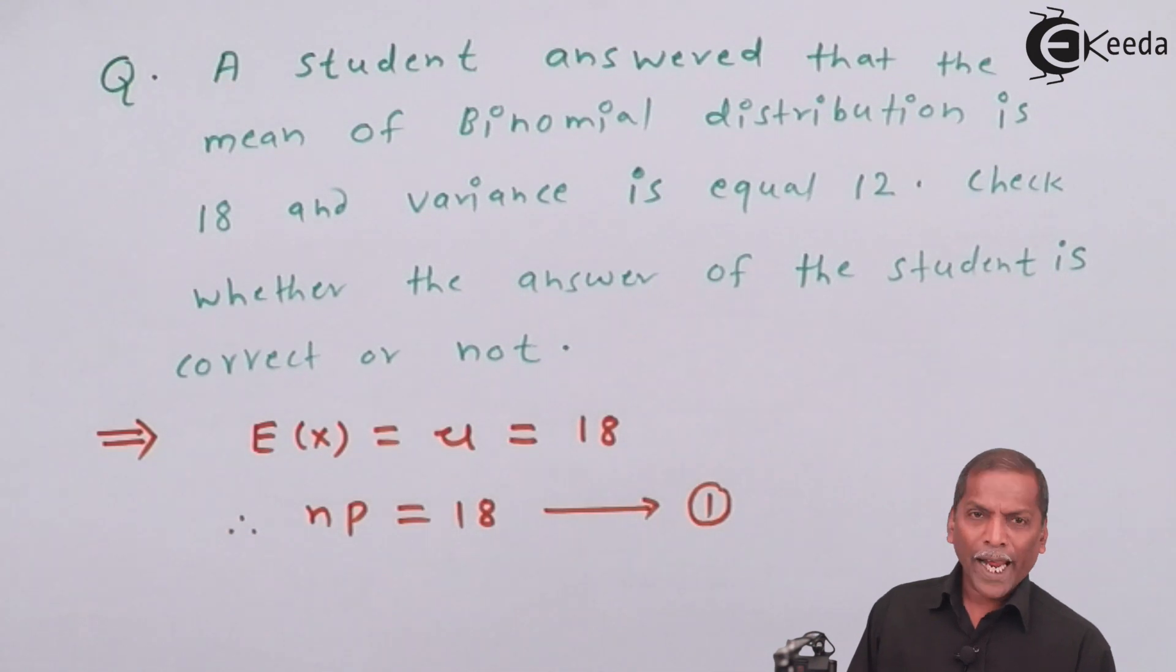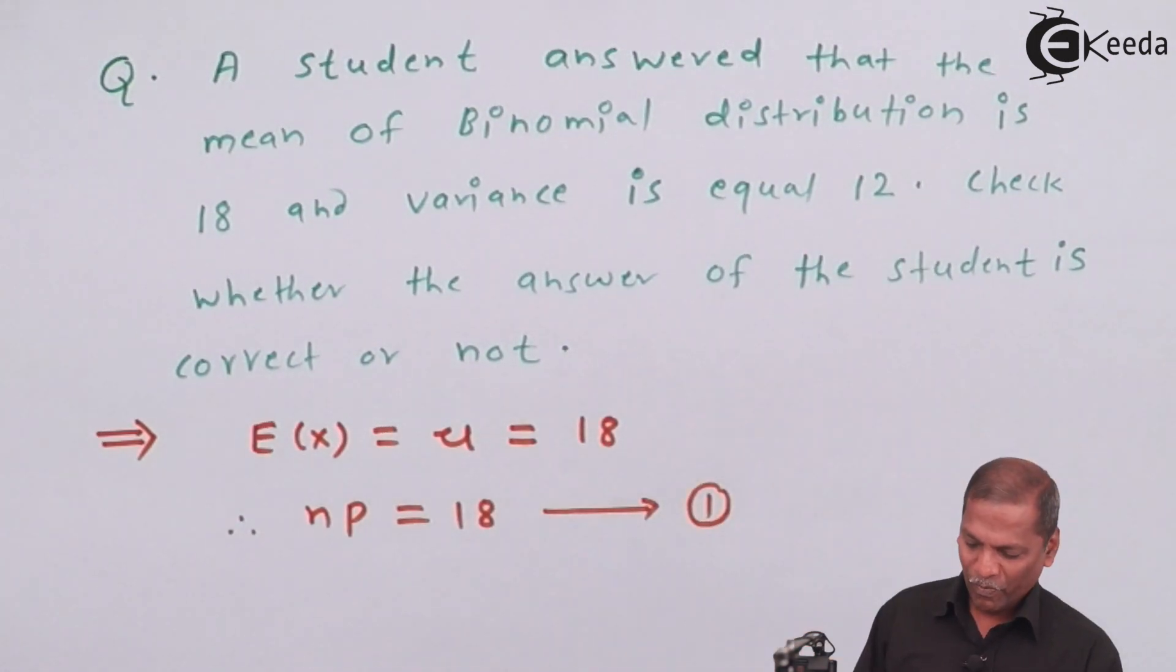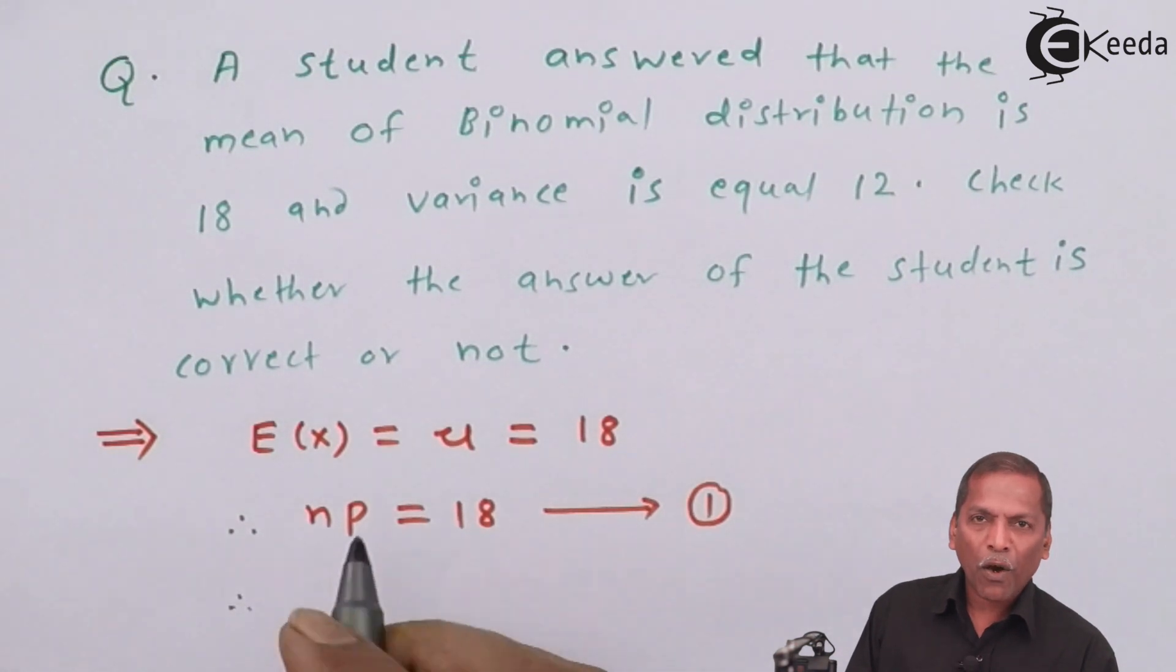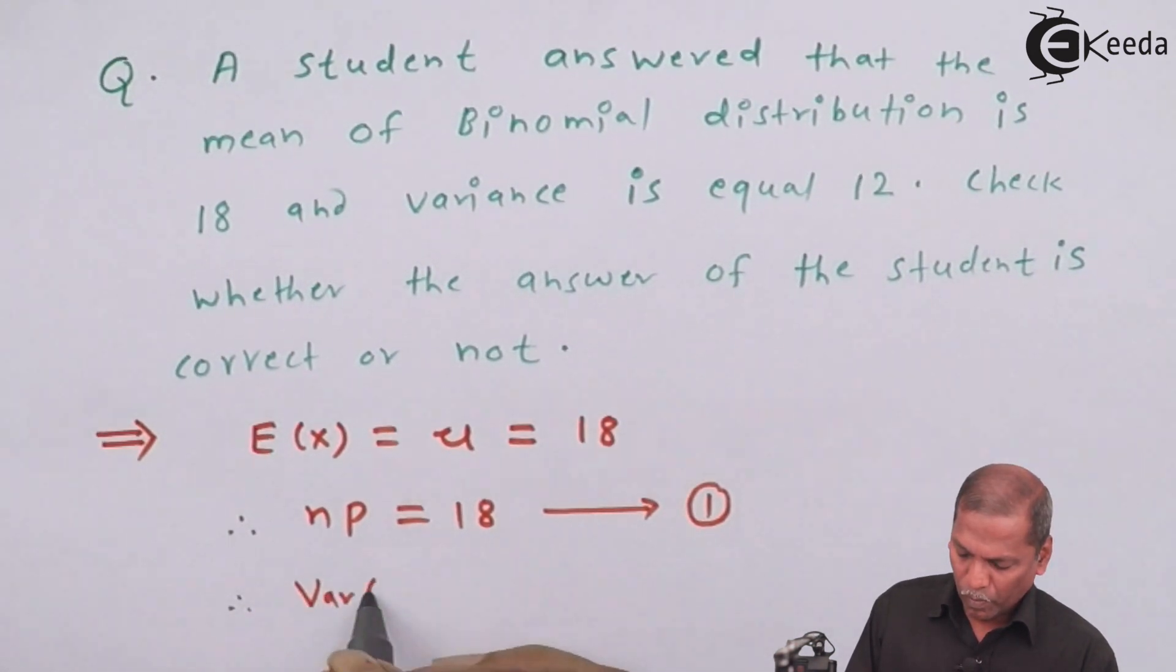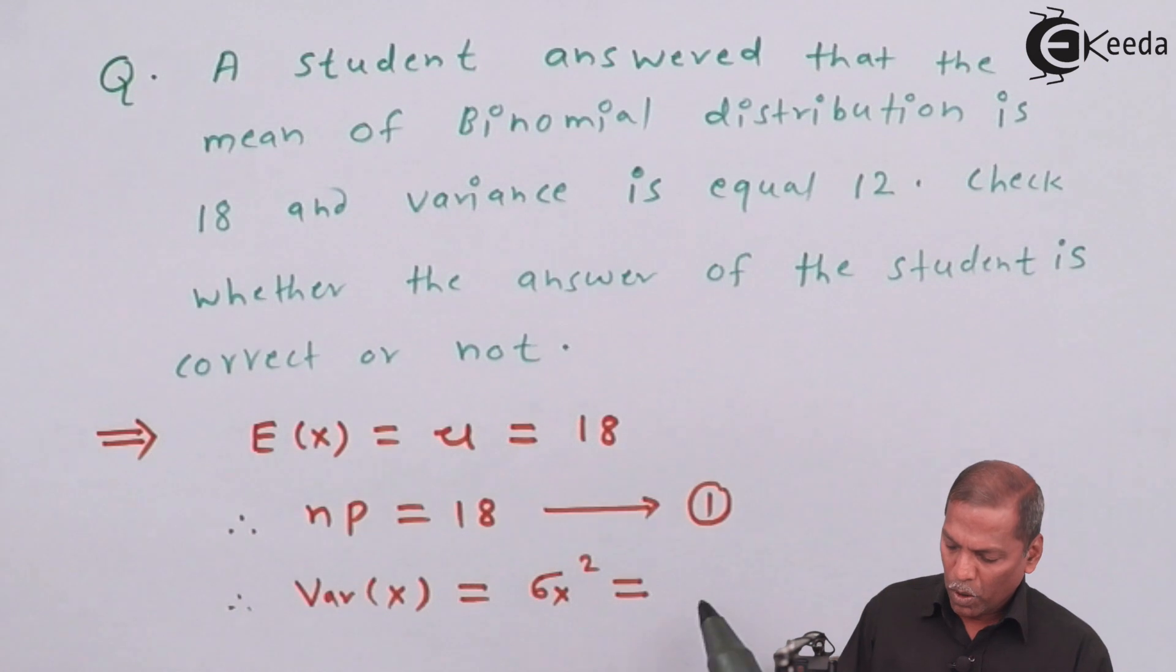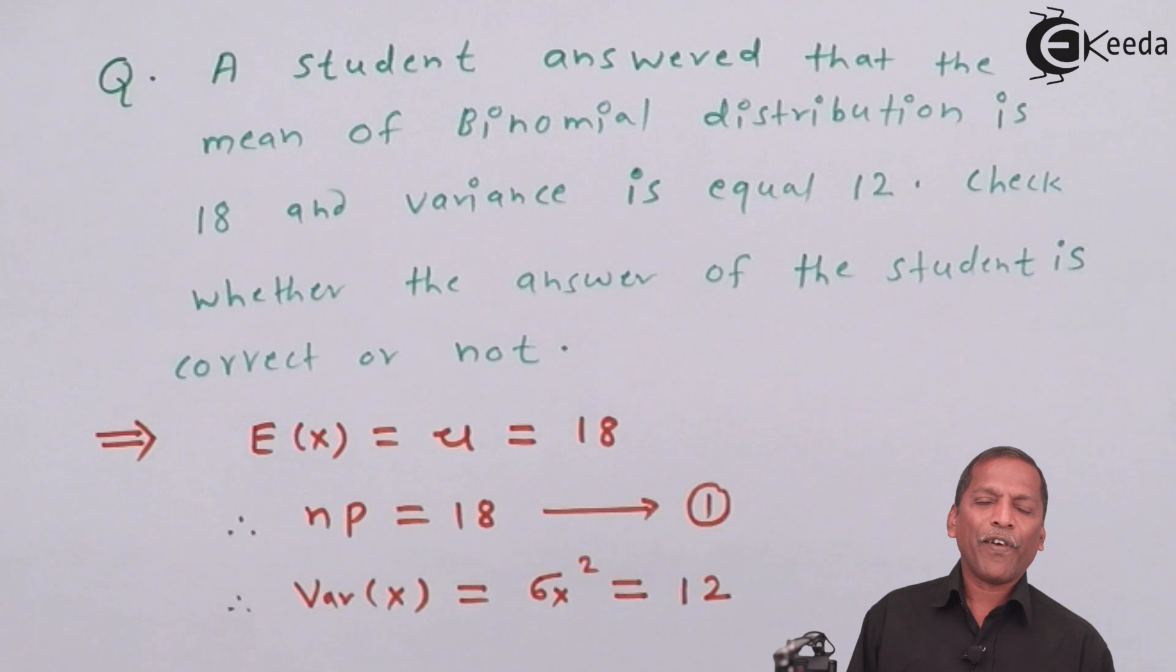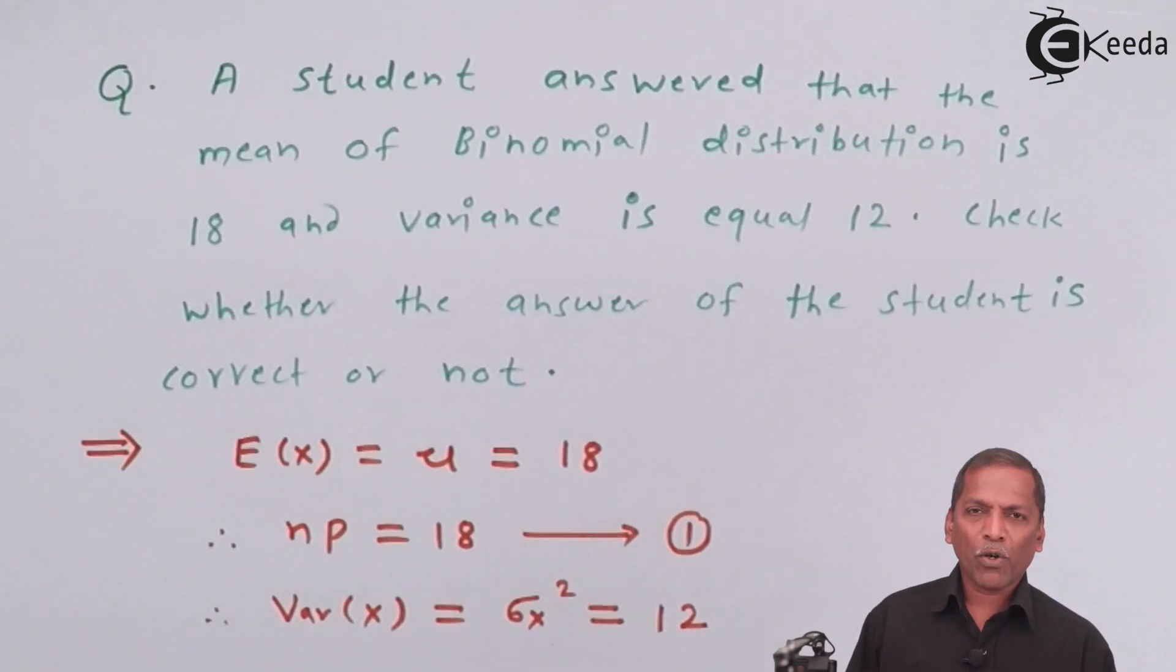Now, next thing given in the question is variance is equal to 12. Therefore, variance of x that equal to σ_x² that equal to given as 12. Now, formula for variance is npq and therefore we have npq is equal to 12.